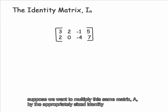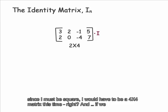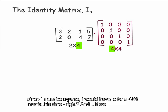Now suppose we want to multiply this same matrix A by the appropriately sized identity matrix on the right. What size matrix would I have to be? Since A is a 2 by 4 matrix, and since I must be square, I would have to be a 4 by 4 matrix this time, right?